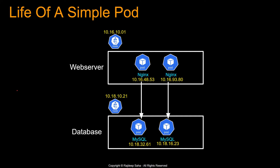Let's start by looking at the life of a simple pod. At this point, we know how to deploy pods with specific container images. So let's say we have two nodes — node one and another node — both have separate IP addresses. And in the first node, we are running web server pods, basically running Nginx.